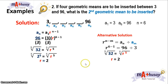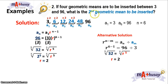Now that we know the common ratio is 2, we find the geometric means by multiplying r to each term: 2 times 3 is 6; from 6, multiply 2 to get 12; from 12, multiply 2 to get 24; from 24, multiply 2 to get 48. The inserted geometric means are 6, 12, 24, and 48. The second geometric mean to be inserted is 12.